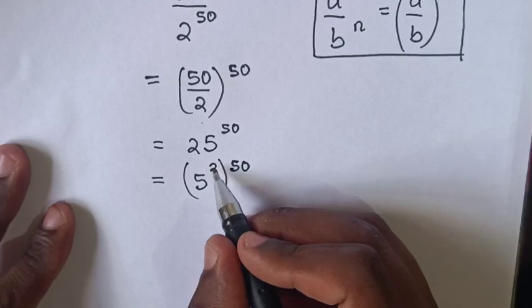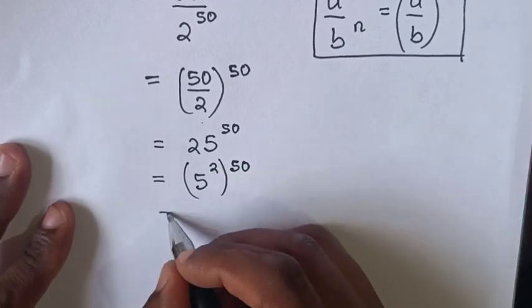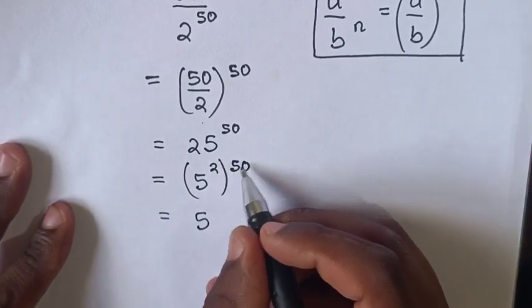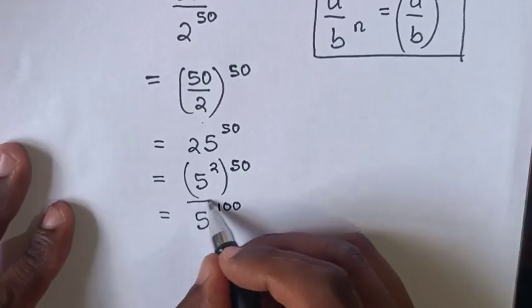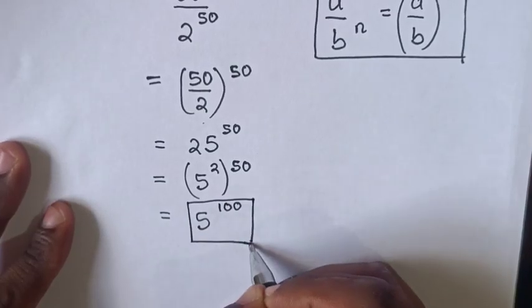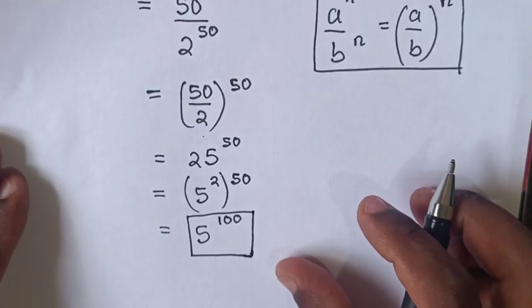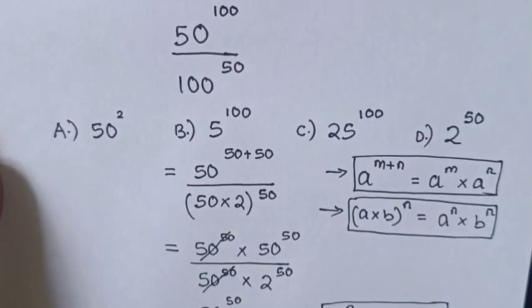Then we multiply the powers, so it equals 5^100, which is our final answer. The answer is B.